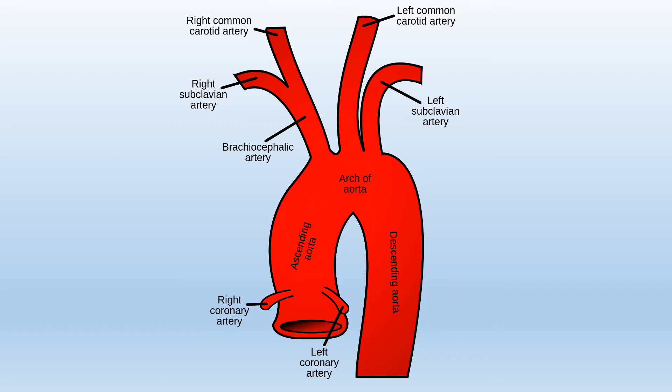The aorta is the largest artery in the body. It's an elastic artery, initially an inch wide in diameter. The aorta can be divided into three main divisions: ascending aorta — the first portion just after the left ventricle — the arc of aorta, and the descending aorta.